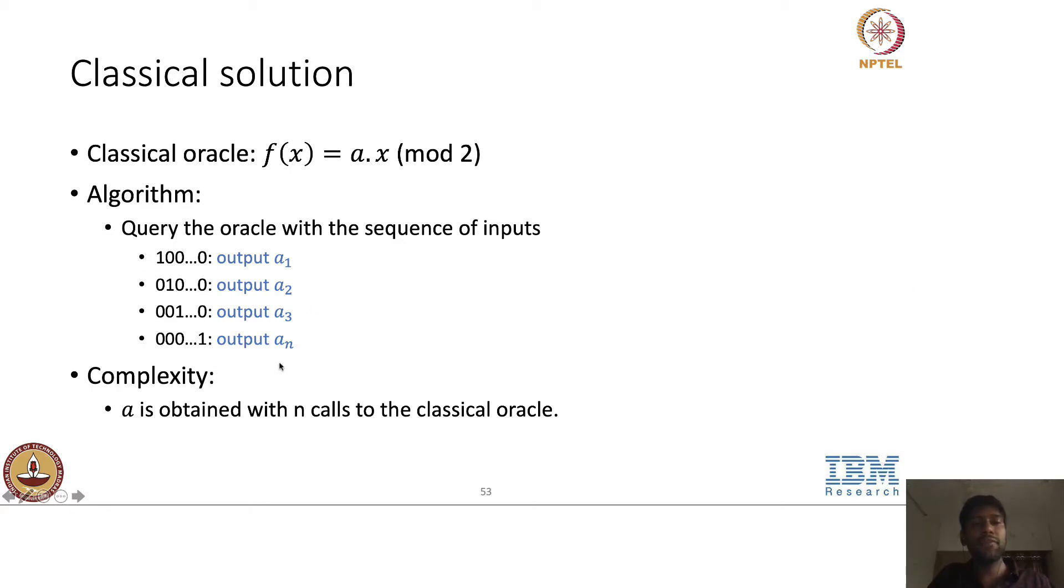So you just have to make n queries. And for the first query, we'll get the first bit. Second query will give the second bit. Third query will give the third bit and so on. So after n queries to the classical oracle, we can obtain each of the n bits, n bits together.